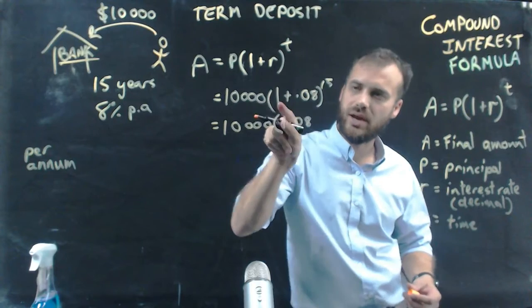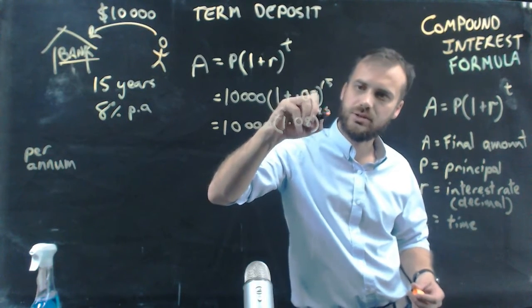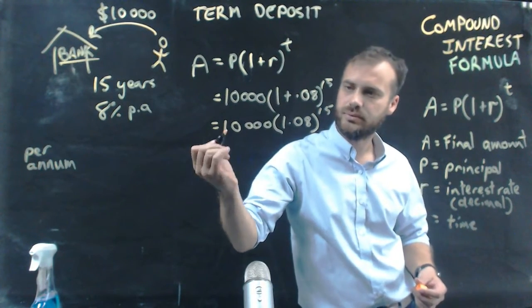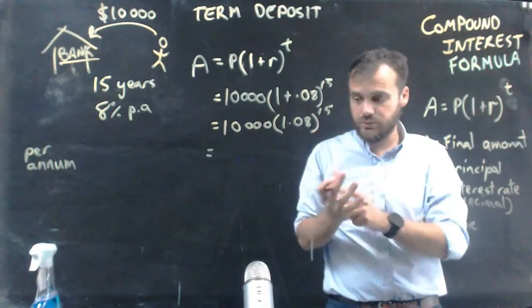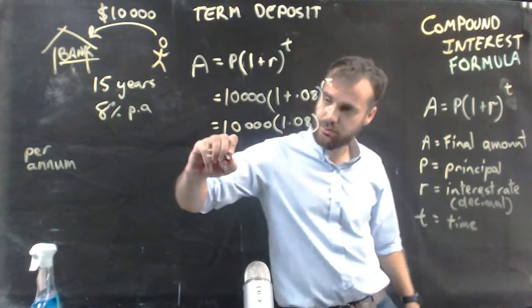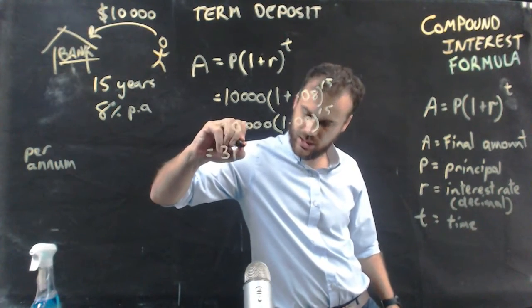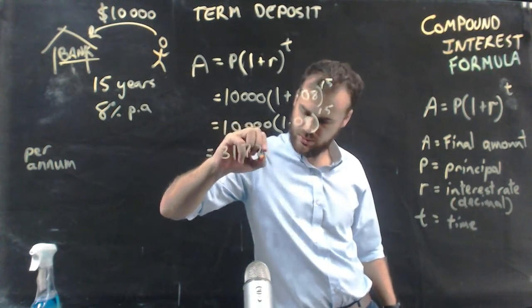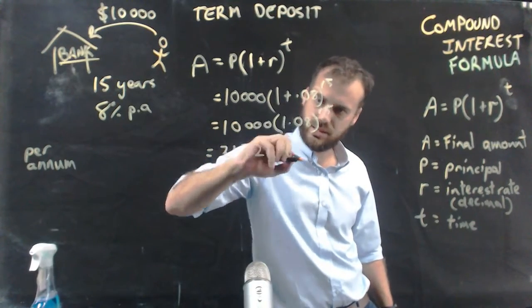1.08, I've added those two numbers together, to the power of 15. Now, I can do all of that on my calculator in one step. Now, when I do that, you might be surprised that the answer is $31,721.69.